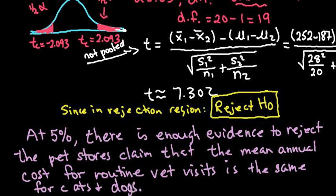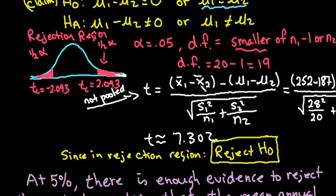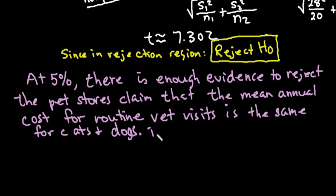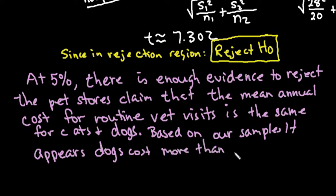We can take this further: since dogs is our first sample and cats is our second, and we got a positive test statistic, x-bar one minus x-bar two being positive tells us that dogs are more expensive. Based on our samples, it appears that dogs' annual vet visits cost more than cats'. As always, thanks for watching — if you have questions or need additional topics covered, please let me know.